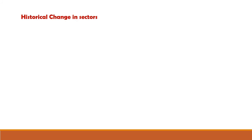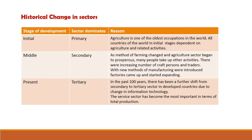The next topic is historical change in sectors. In a table with stages of development, dominant sector, and reason: in the initial stages, in all developed and developing countries, the primary sector is dominant. Agriculture is one of the oldest occupations in the world — all countries depend on agriculture and related activities in initial stages. Then the focus shifts to the secondary sector as methods of farming changed, many people took up other activities, craftspersons and traders increased, and new manufacturing methods introduced factories which started expanding.